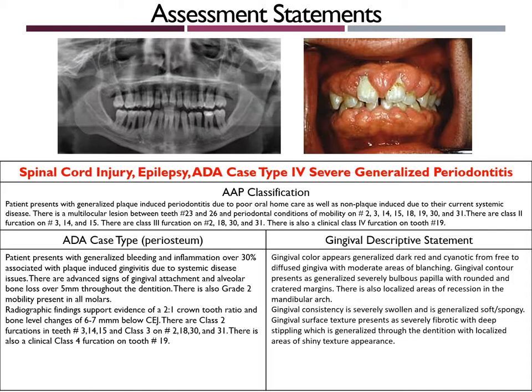I will be reading the AAP classification statement as follows. Patient presents with generalized plaque-induced periodontitis due to poor oral home care, as well as non-plaque-induced due to their current systemic disease. There is a multilocular lesion between teeth number 23 and 26 and periodontal conditions of mobility on number 2, 3, 14, 15, 18, 19, 30, and 31. There are class 2 furcations on number 3, 14, and 15. There are class 3 furcations on number 2, 18, 30, and 31. There is also a clinical class 4 furcation on tooth number 19.